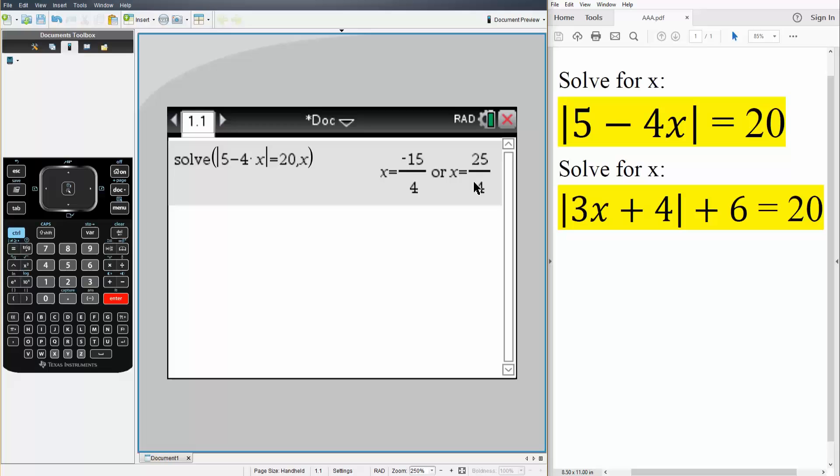Now if we plug in 25 over 4 we get 5 minus 25 and the absolute value of 5 minus 25 is the absolute value of minus 20 which is going to be 20. And so it's correct. And now we'll solve this problem right here.